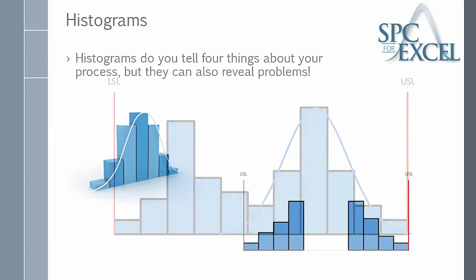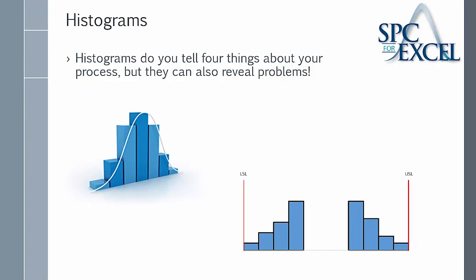So those are our five examples. Histograms do tell you those four things about your process, which range of values occur most frequently, the shape of the value, etc. But they can also reveal problems in your process. So histograms are very, very valuable tools.